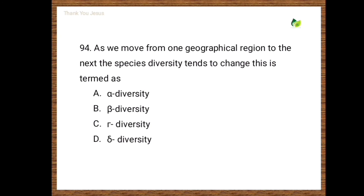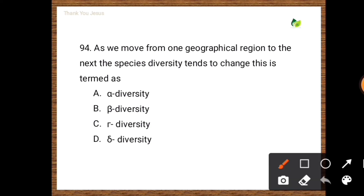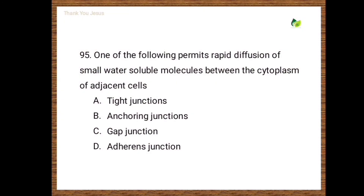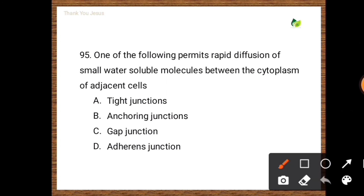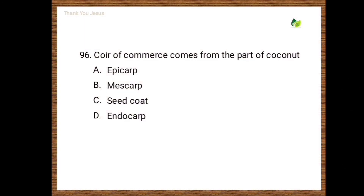Next question: As we move from one geographical region to the next, species diversity tends to change. This is termed as — alpha diversity, beta diversity, gamma diversity, epsilon diversity. The correct option is beta diversity. Next question: Which of the following permits rapid diffusion of small water-soluble molecules between the cytoplasm of adjacent cells? Options are tight junctions, anchoring junctions, gap junctions, adherens junctions. The correct option is gap junctions.